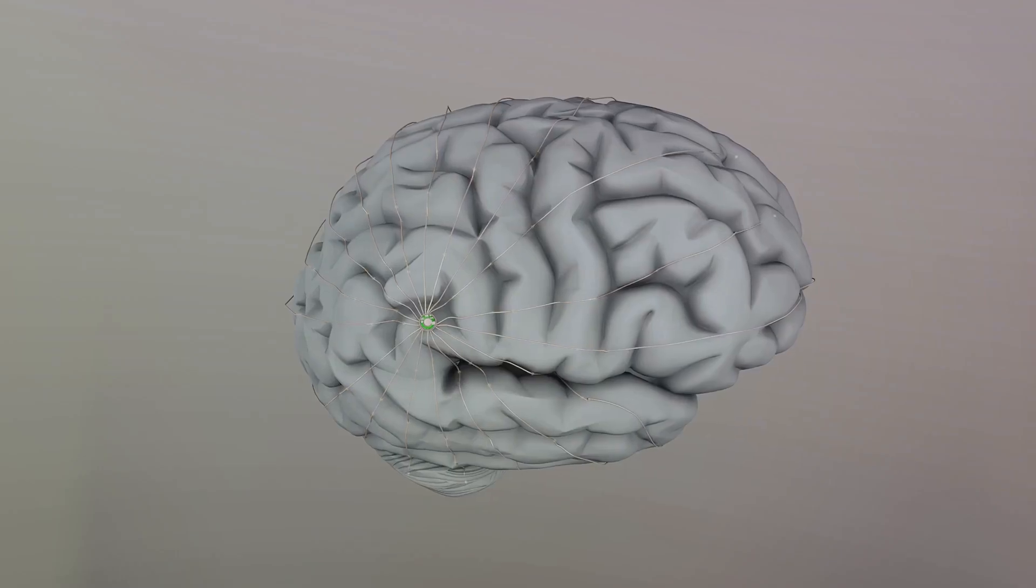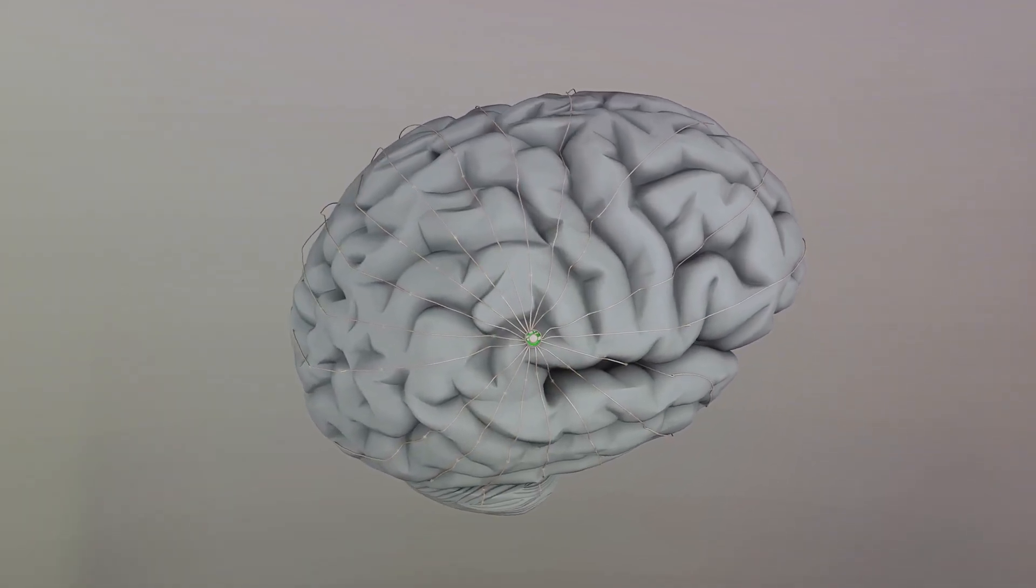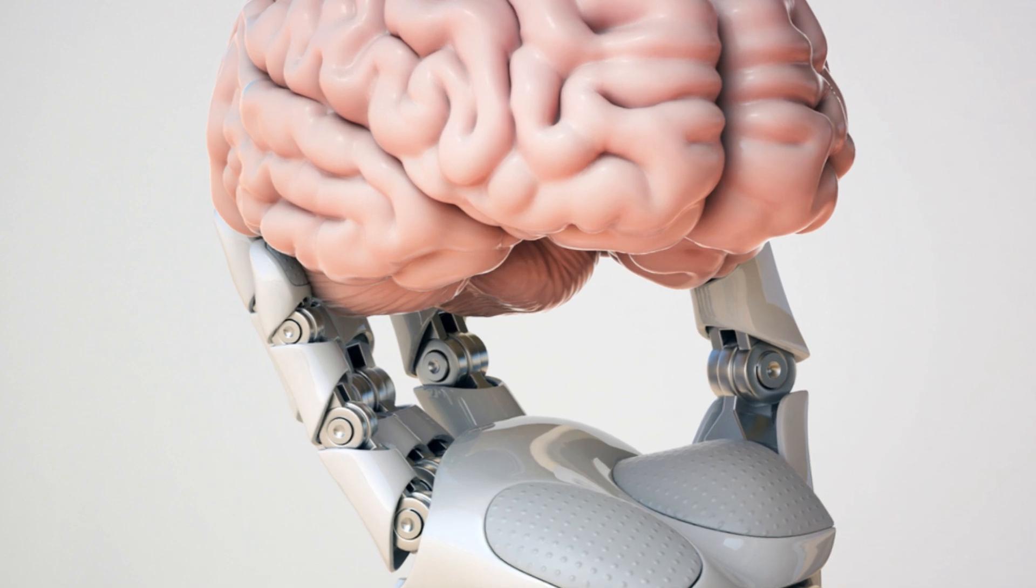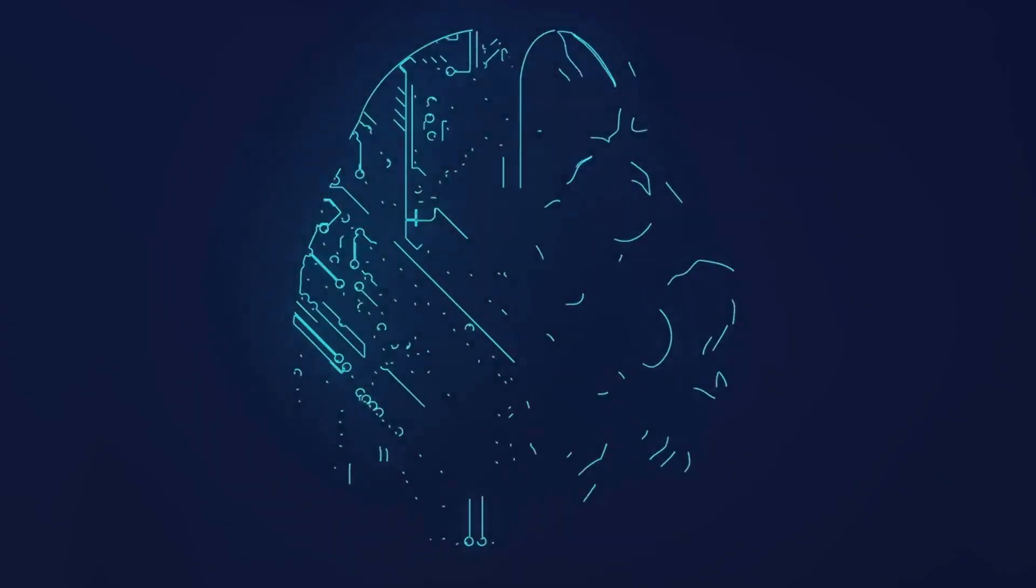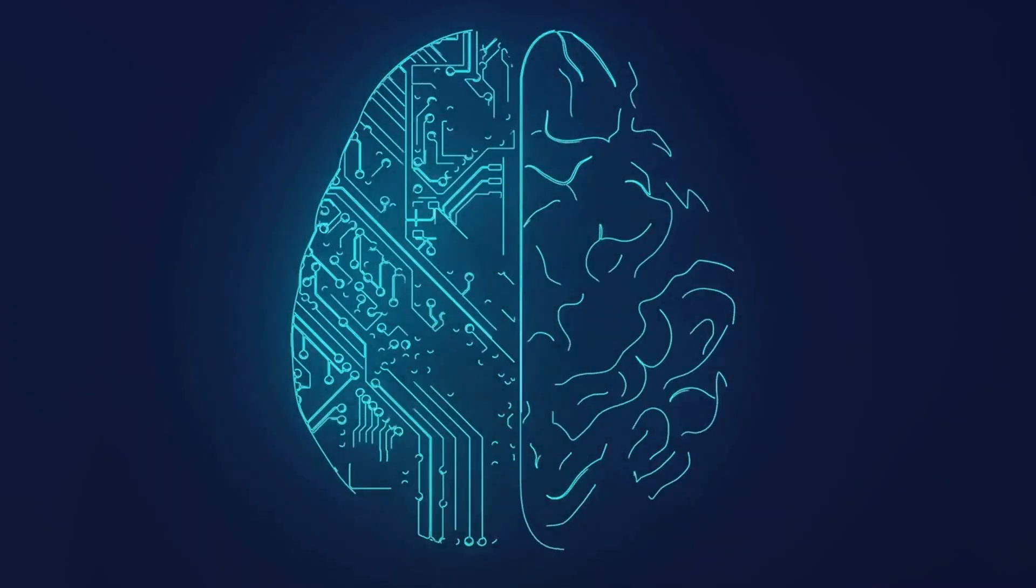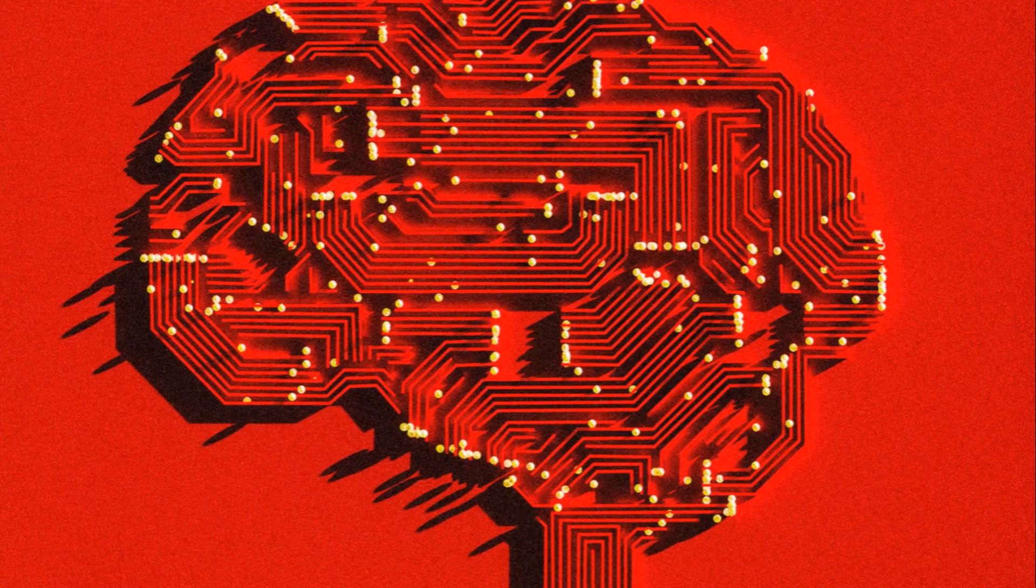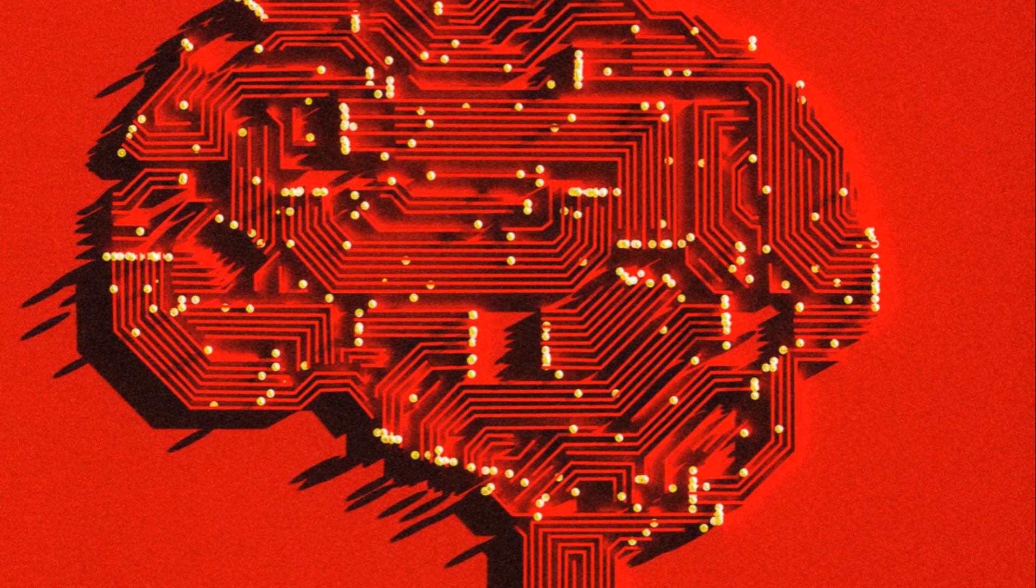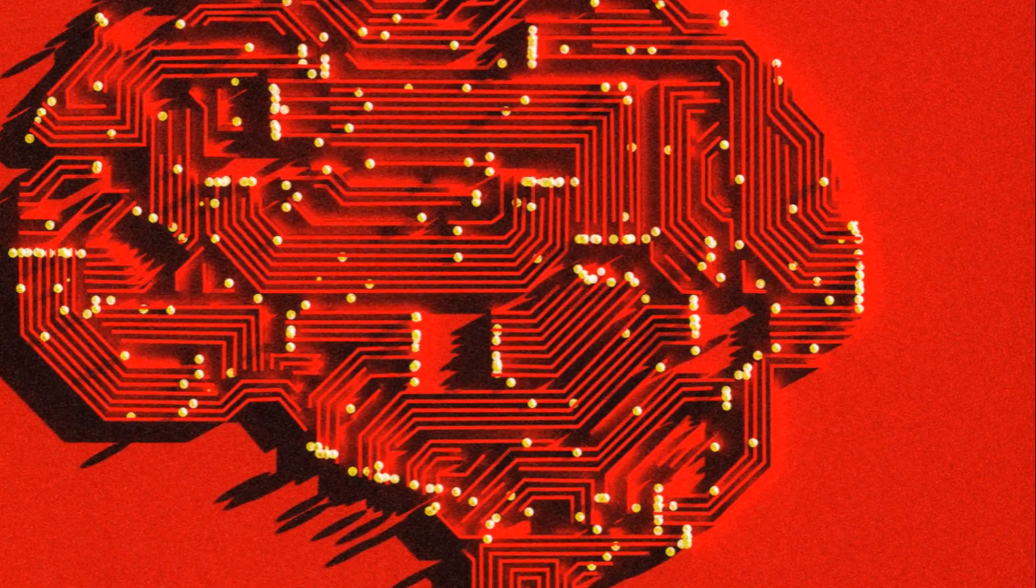For context, brain-computer interfaces collect and analyze brain signals to allow direct control of an external device. In this instance, the monkey's brain signals were used to control a robotic arm. While researchers in the United States have tested similar systems in paralyzed people to allow them to control robotic arms, this demonstration underscores China's progress in developing its own brain-computer interface technology.